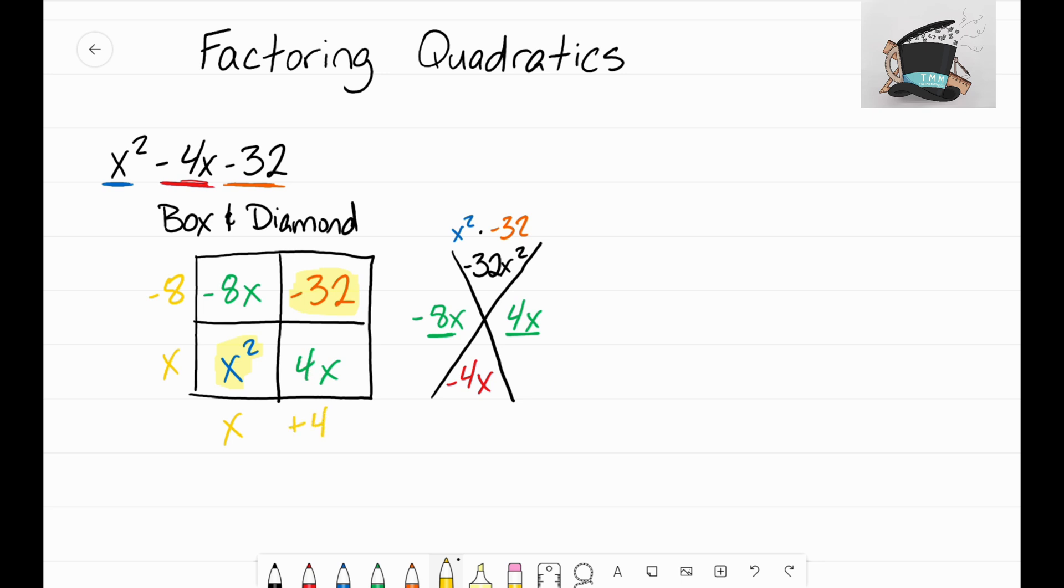And x times what gives me positive 4x? Well, that would be a positive 4. These two factors on the side, I'm going to highlight in a different color. This factor and this factor on the side—those are your factors. Those are the two factors that make up this expression. So we've solved the problem. All I have to do now is just write equals: x minus 8, close that factor, start my new factor, x plus 4.